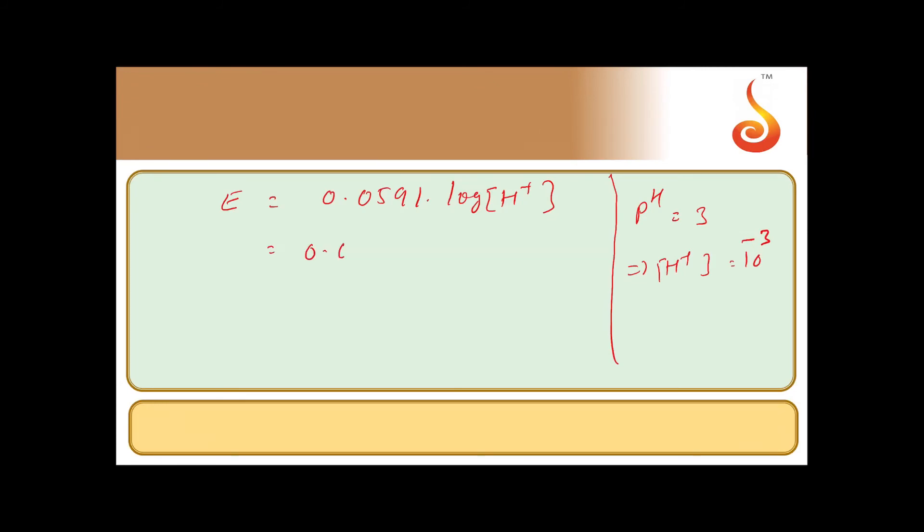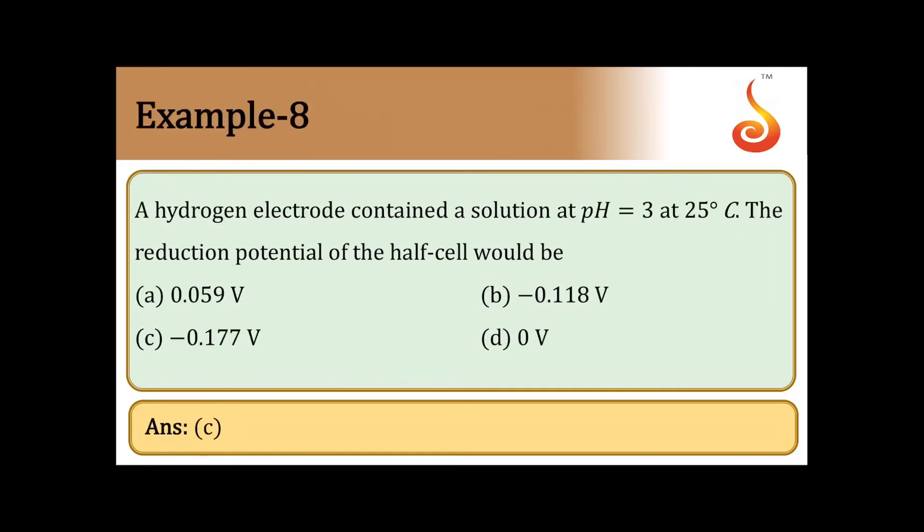Now we are substituting the value here: 0.0591 into log of 10 to the power of minus 3, which is minus 3 log 10. We know log 10 is 1, so 0.0591 into minus 3 gives the value minus 0.1773 volts.